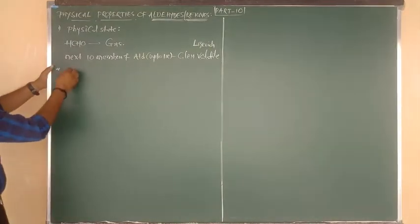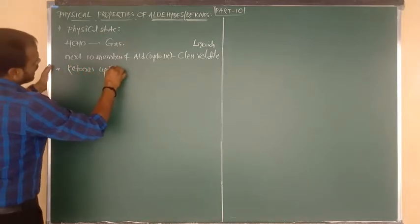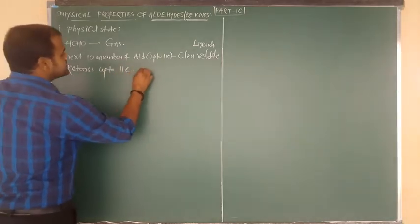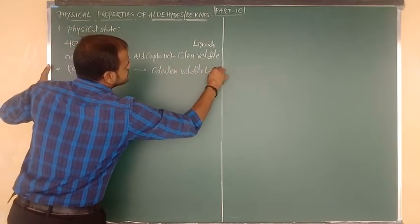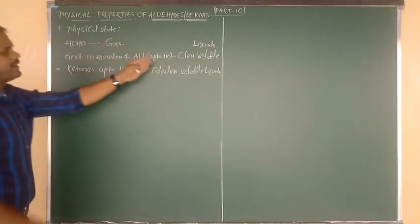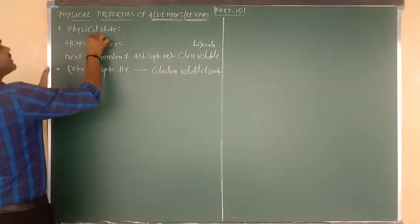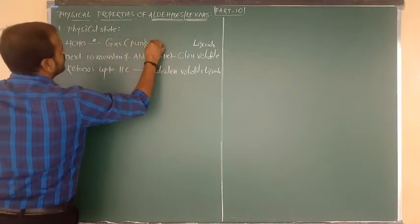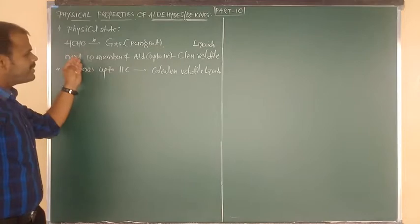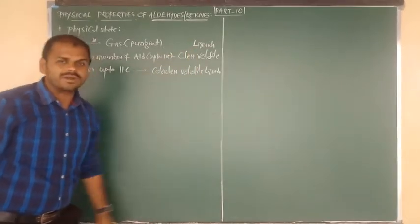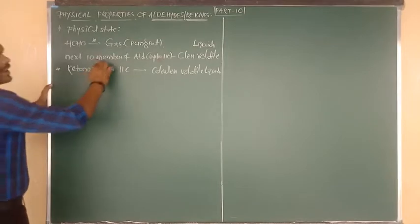For ketones, up to 11 carbons they are also in the same physical state — colorless volatile liquids. So aldehydes up to 11 carbons and ketones up to 11 carbons are all colorless volatile liquids. Only formaldehyde is a gas, and it is a pungent smelling gas.